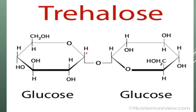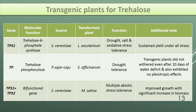Trehalose is a rare non-reducing sugar that protects biological molecules in response to different stress conditions. It does not accumulate to high enough levels in most plants, probably because of trehalase activity. Trehalose is synthesized in two steps from glucose-6-phosphate and uridine diphosphoglucose via trehalose-6-phosphate. The first step is catalyzed by trehalose phosphate synthase and the second by trehalose-6-phosphatase. Transgenic Lycopersicon esculentum showed drought, salt, and oxidative stress tolerance with sustained yield under all stresses. Saccharum officinarum showed drought tolerance and no pleiotropic effects.